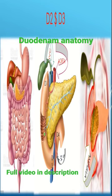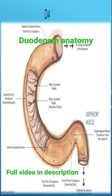D2 is vertical and D3 is horizontal; D2 is posterior to D3. D4 is the part of the duodenum after crossing the aorta, leading to a flexure.